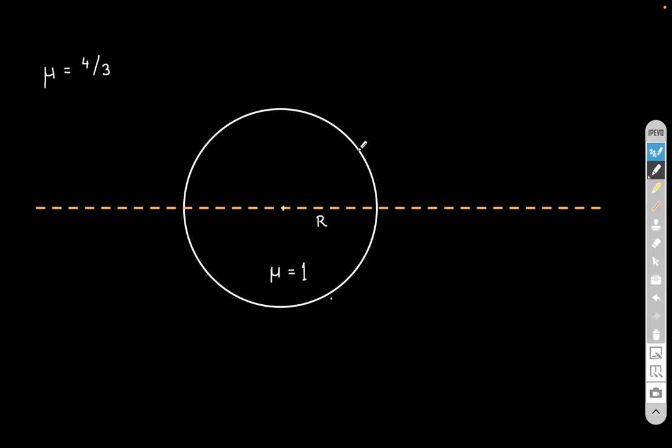Now the question is that parallel rays are coming, which are parallel to this dotted line. And we need to find out the final image. So first of all, since the rays are coming parallel, so definitely we can say that the object is at infinity.